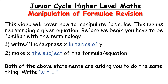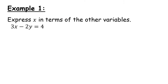In both of those cases, what they're asking us to do is to write x equals, and the answer would then contain y or any other variables. So let's start with the first example. We've been asked to express x in terms of the other variables. In this example, we only have y as another variable, but that's absolutely fine. The goal is to get x on its own.